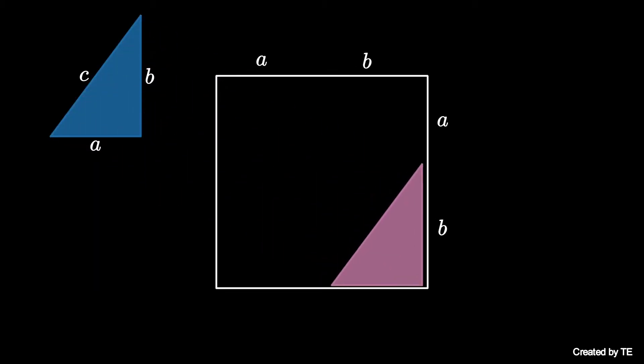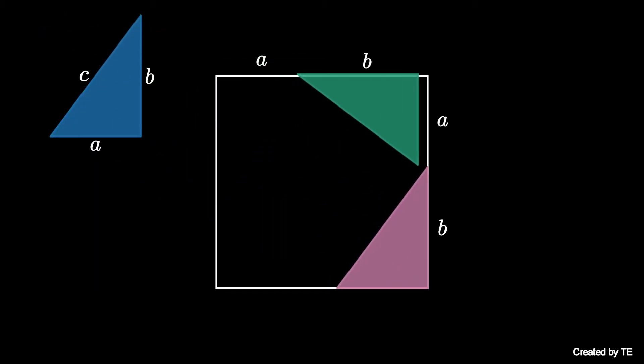Start with a right triangle with legs of length a and b and hypotenuse of length c. Now draw an a plus b by a plus b square. We can fit four rotated copies of the triangle in the square like this.